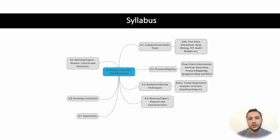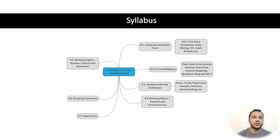We'll also discuss process mapping — when we try to understand a business process using certain protocols and benchmark practices. Then there are analytical review techniques: ratio analysis, trend analysis, and benchmarking. We'll also cover protocols for working papers — their purpose, characteristics, review controls, and retention.